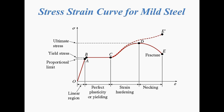A typical stress-strain curve of mild steel under tension may look like this. However, this curve is not to scale. This curve shows the effect of tension on a mild steel specimen, where stress is plotted on the y-axis and strain is plotted on the x-axis.